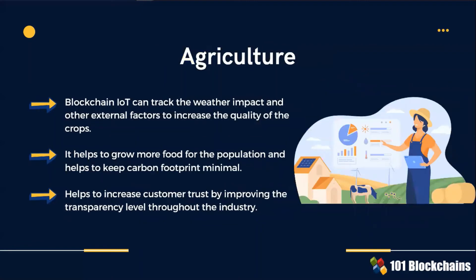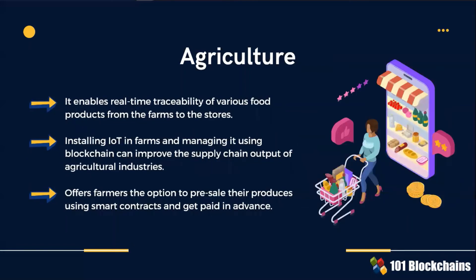IoT blockchain in agriculture helps increase customer trust by improving the transparency level of the producer throughout the industry. Installing IoT in farms and managing it using blockchain can improve the supply chain output of agricultural industries, enabling real-time traceability of various food products from farms to stores.